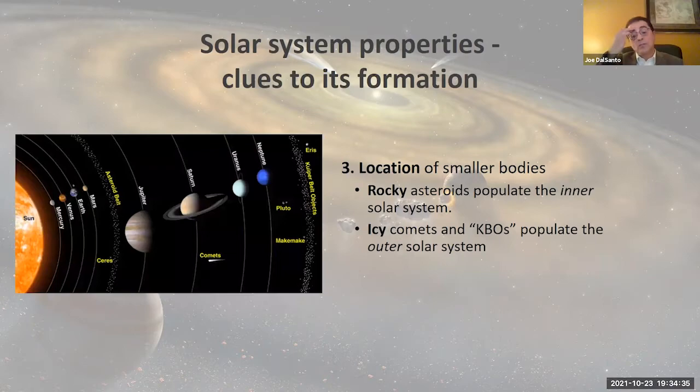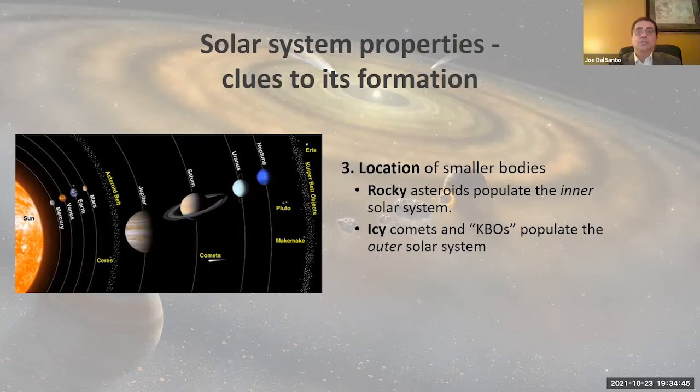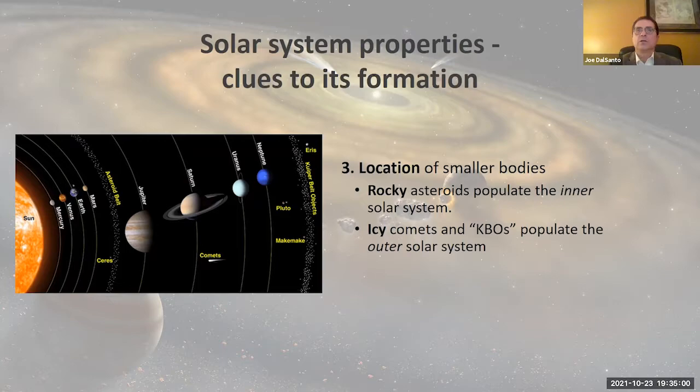Let's finish up with the smaller bodies of the solar system. The asteroids are small rocky objects in the inner solar system, while comets and Kuiper Belt objects are in the outer solar system. You're probably already noticing the pattern of what types of objects are in different regions of the solar system, and this again is significant.